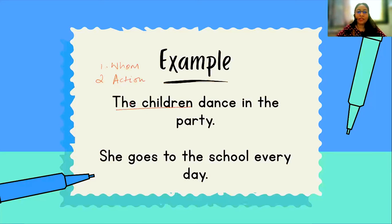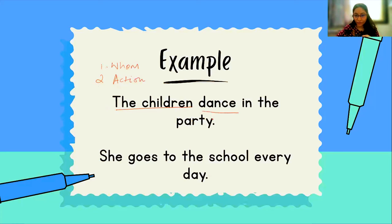The second point: they are performing the main action in the sentence. What is the action here? The action of dancing. The verb is 'dance' — the action of dancing. Who is performing that? The children. So that's your personal pronoun.